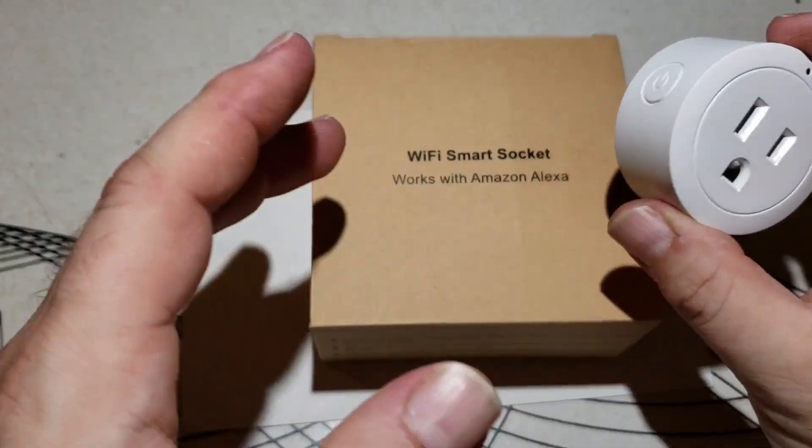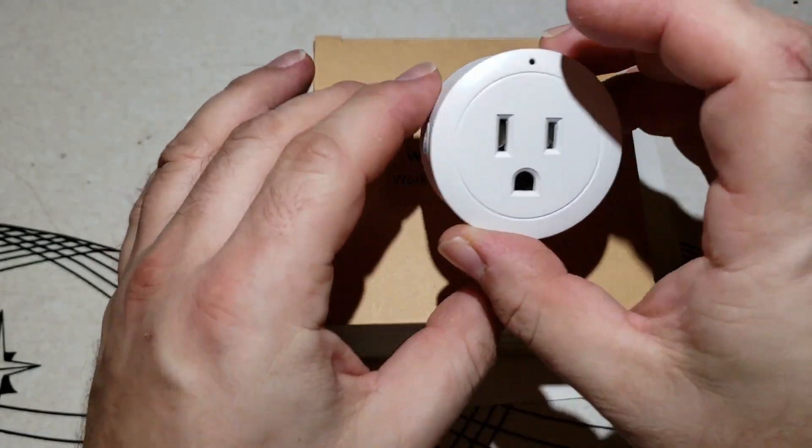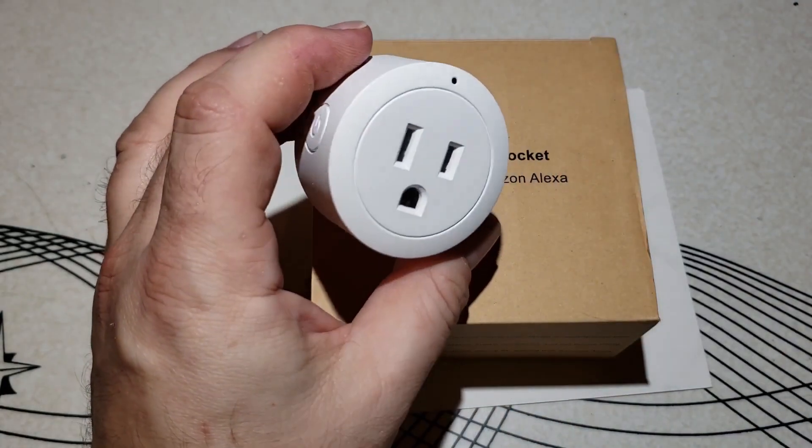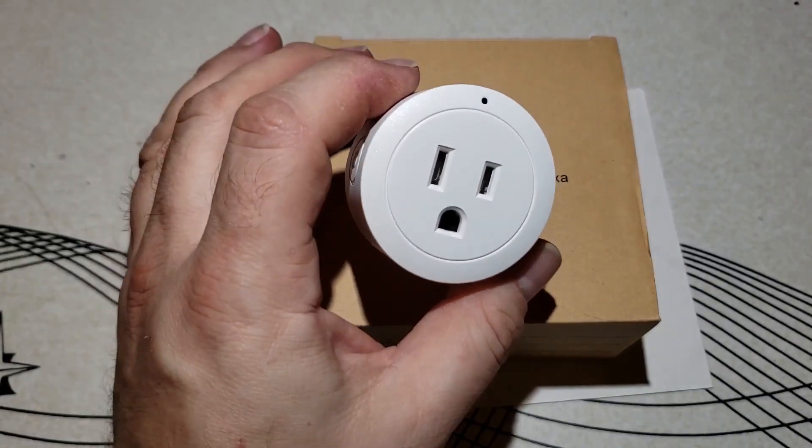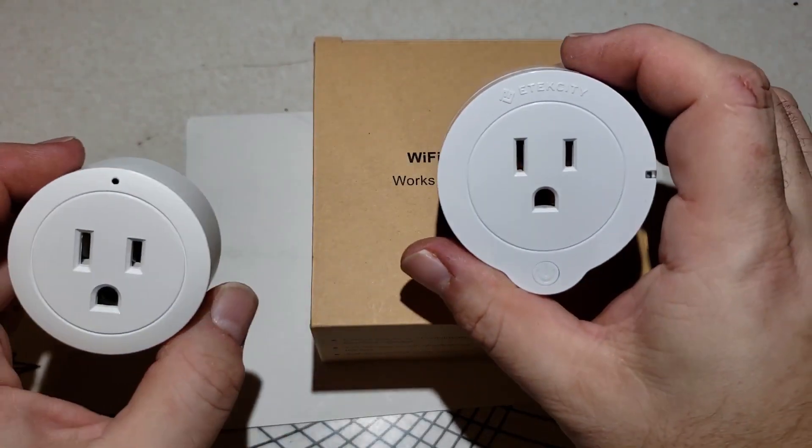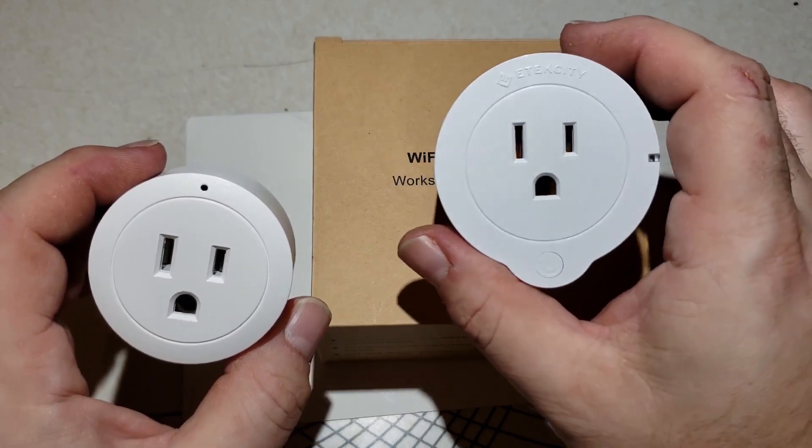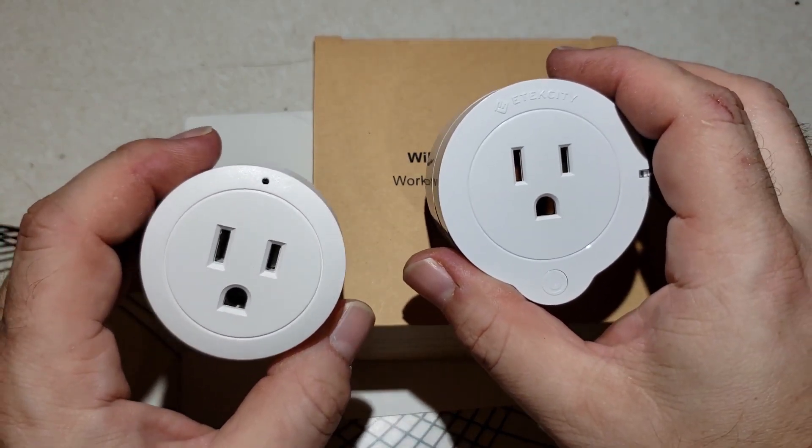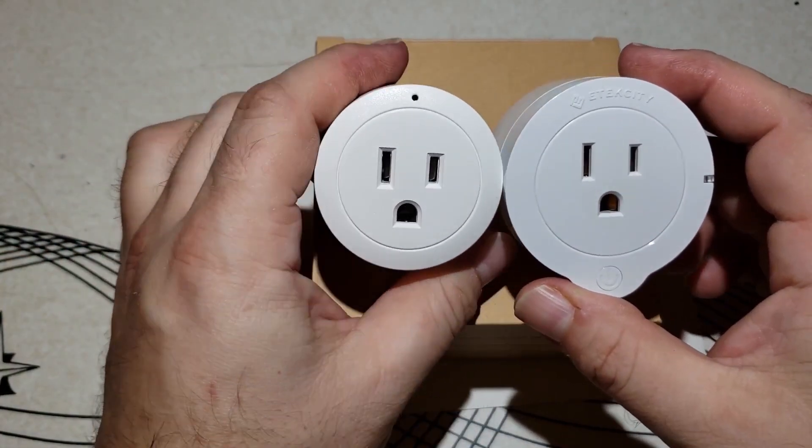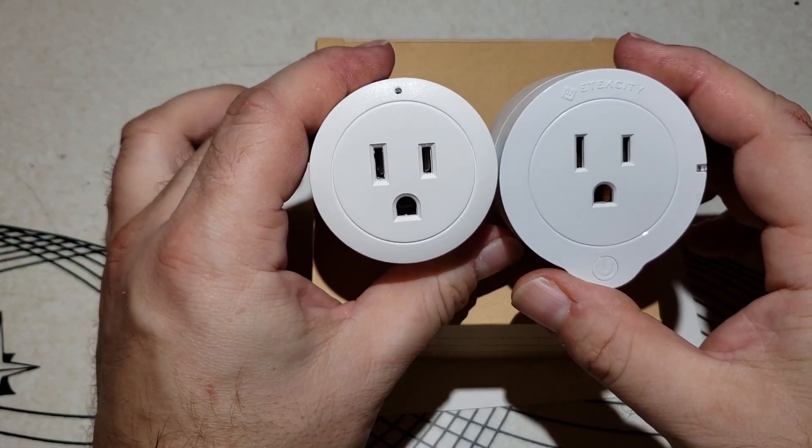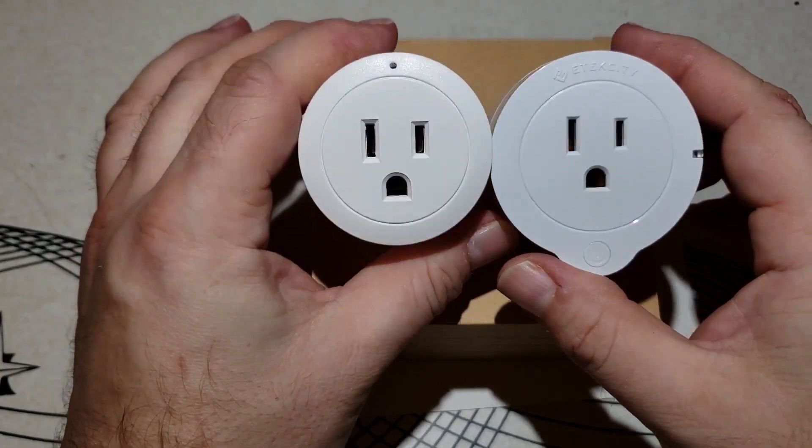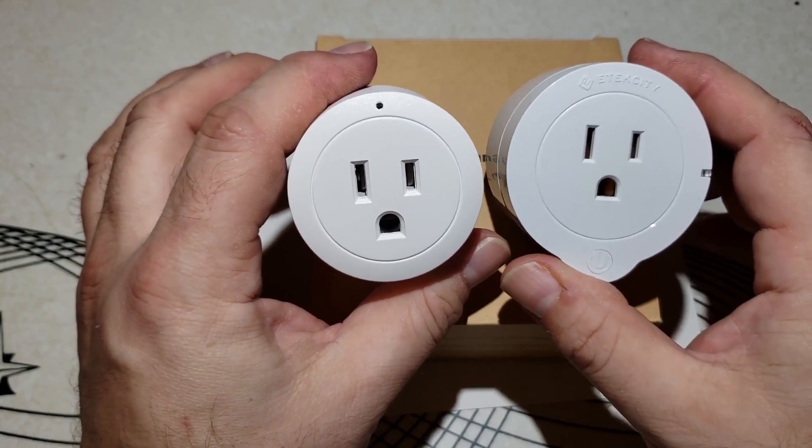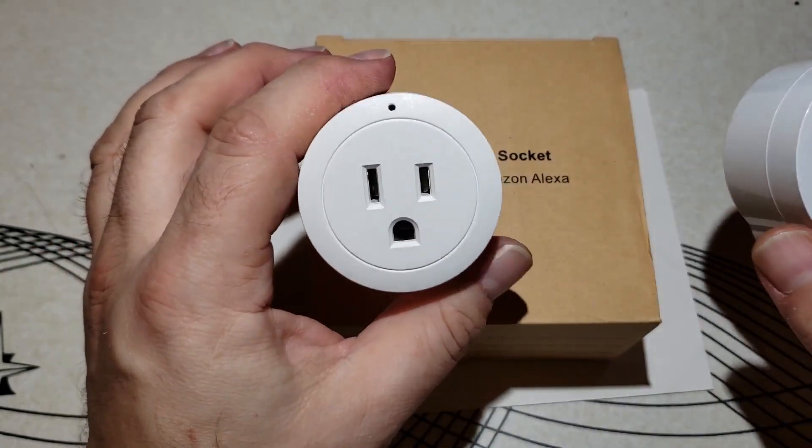Up until now I've been using the eTech City brand. These are great, I have no complaints about these except for their size. You notice the Amison outlet is a bit smaller. In fact, the nice thing about this, the benefit over the eTech City outlet, is that you can run two of these in your duplex outlet at the same time.